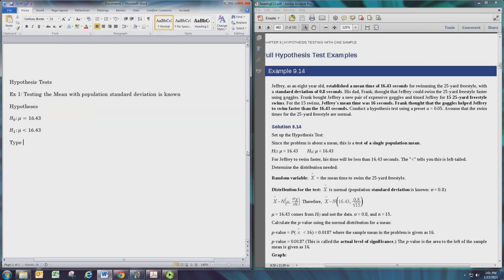Next we want to determine what the type of test is. In this case we have a left-tailed test since the inequality symbol in the alternative hypothesis points to the left.